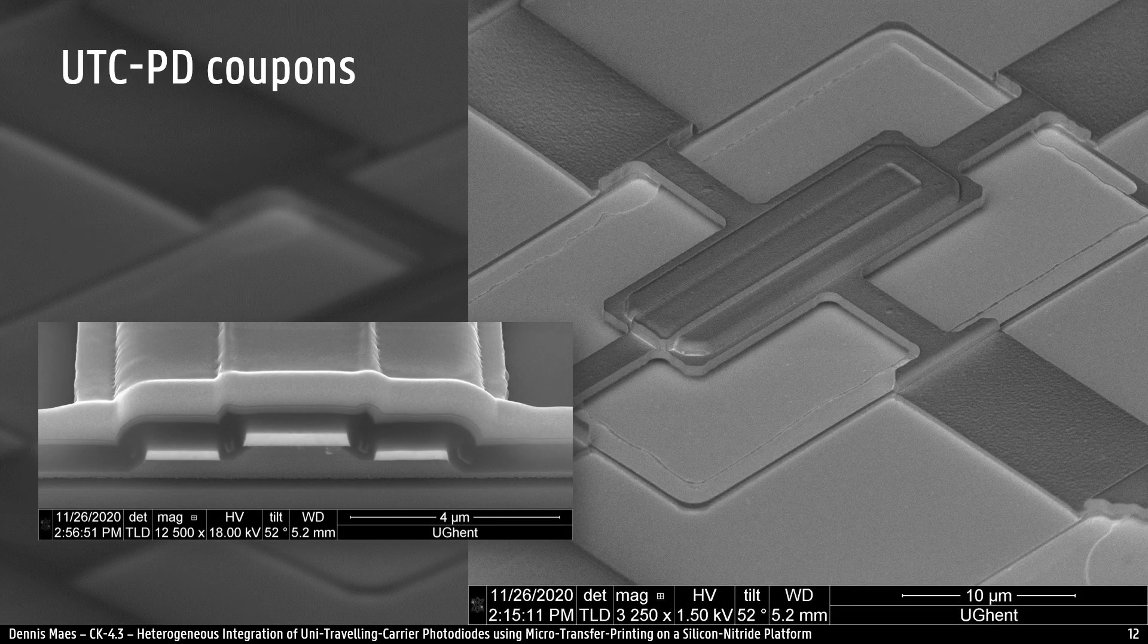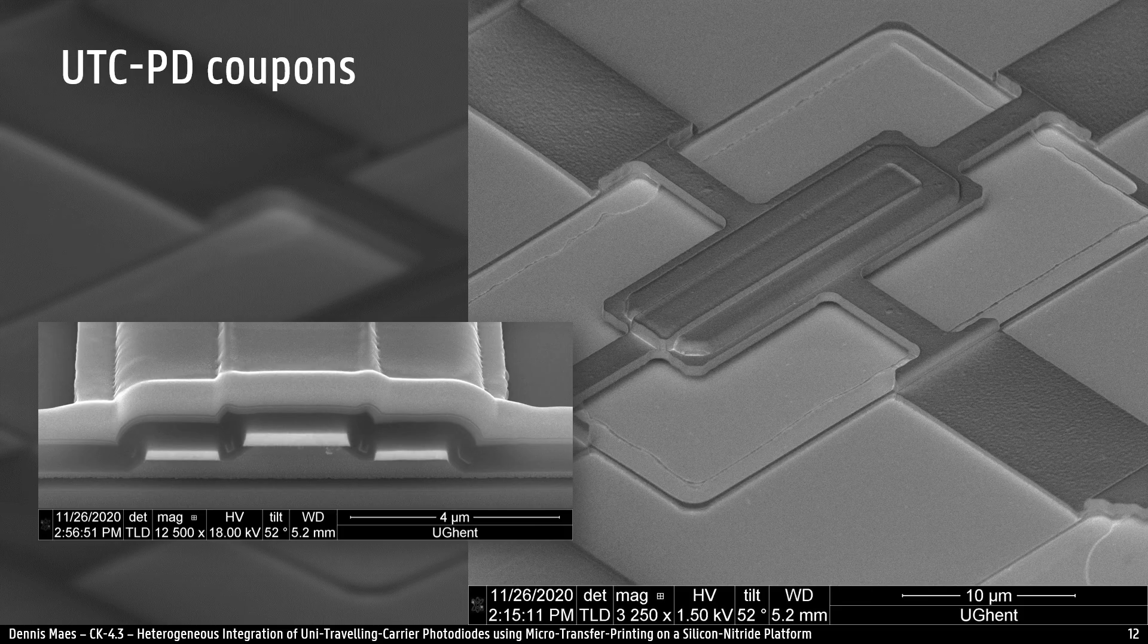This release etch creates suspended coupons. In this picture you can see a coupon that is tethered by four silicon nitride strips to the substrate and floats 500 nanometers above it.